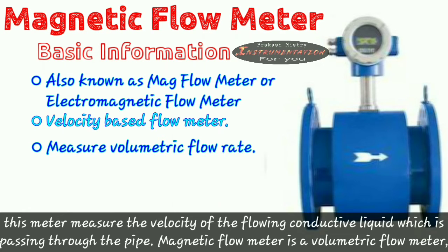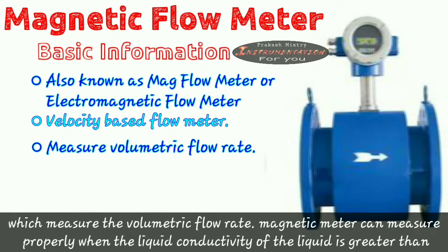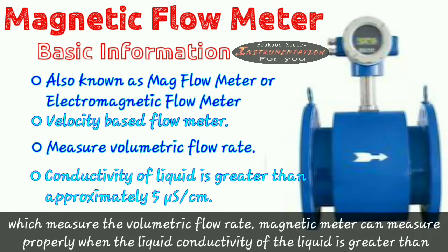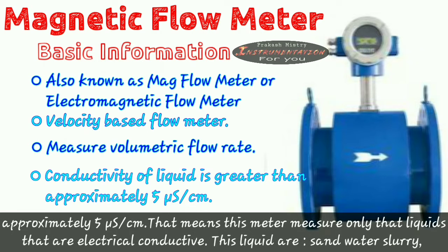Magnetic flow meter is a volumetric flow meter which measures the volumetric flow rate. Magnetic meter can measure properly when the liquid conductivity is greater than approximately 5 microsiemens per centimeter. That means this meter measures only that liquid that are electrically conductive.